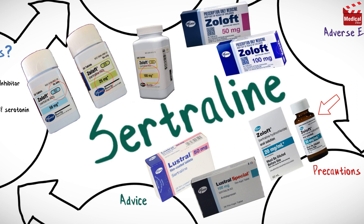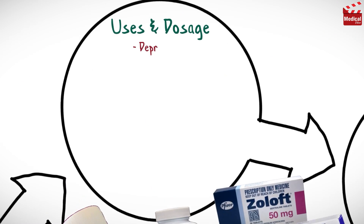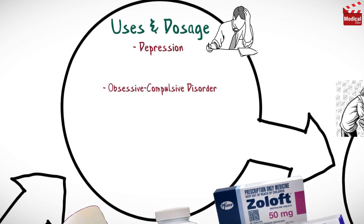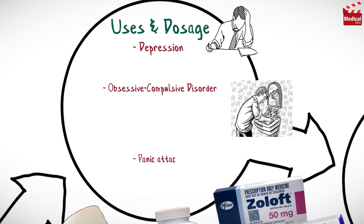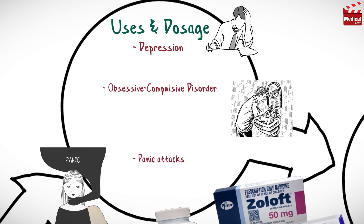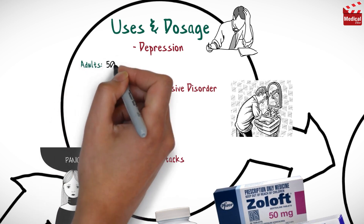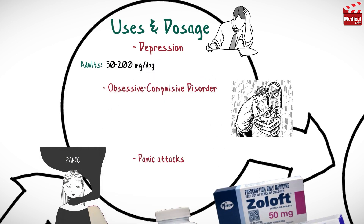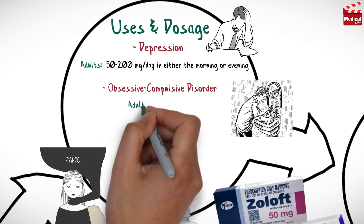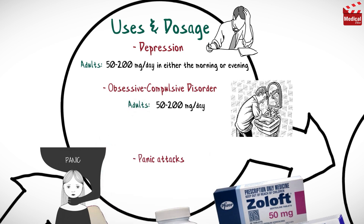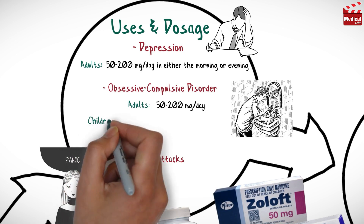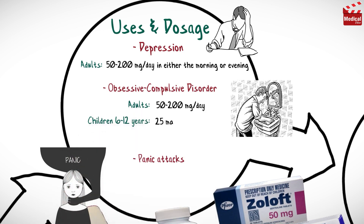Sertraline is used in the treatment of depression, obsessive compulsive disorder, and panic attacks. Initial dosage for depression for adults is 50 to 200 milligrams per day in either the morning or evening. For obsessive compulsive disorder, the dosage for adults is 50 to 200 milligrams per day; for children 6 to 12 years, 25 milligrams per day.